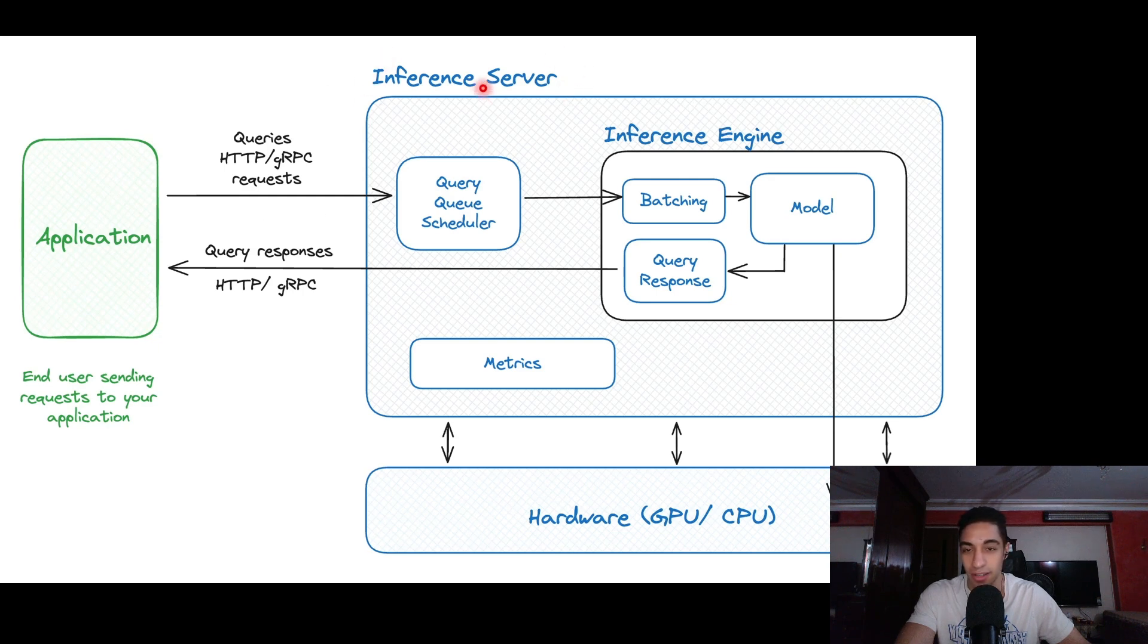This is a general inference architecture where you have different users sending requests to your inference server, received by a scheduler. The scheduler decides which requests should be served at different moments. You have your model running on GPU—definitely no models running on CPU, especially LLMs at the moment.